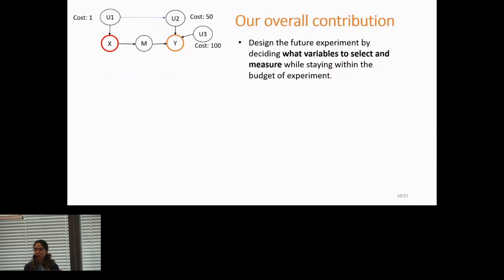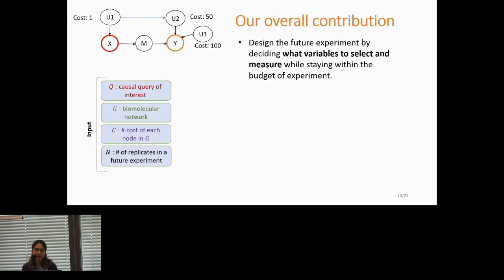Our contribution tries to overcome the limitations that I just mentioned, and in general, we are interested in designing future experiments by deciding what variables to select and measure while staying within the budget of experiment. We require a couple of inputs to our approach, which is obviously the query that we are interested in finding the answer for. We need a biomolecular network structure, and we need to have cost for measuring each single node in the graph. And another tuning parameter of our approach is N, which is number of replicates in the future experiment. So we can play with N and obtain different results. So our approach is not limited to only assuming that we have unlimited data points.